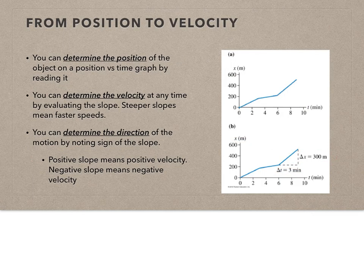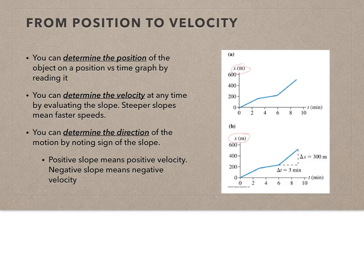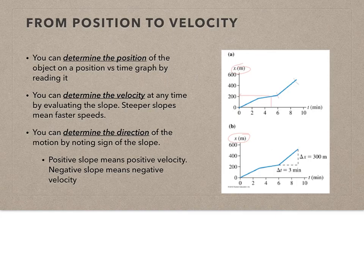If I'm looking at a position versus time graph — always look at the label first — you can determine position by just reading it on the graph. If someone asks what's the position at five seconds, you trace up and read off roughly 210 or 220 meters. I can determine velocity by evaluating the slope at any segment or any point. The magnitude of that slope tells me the speed.